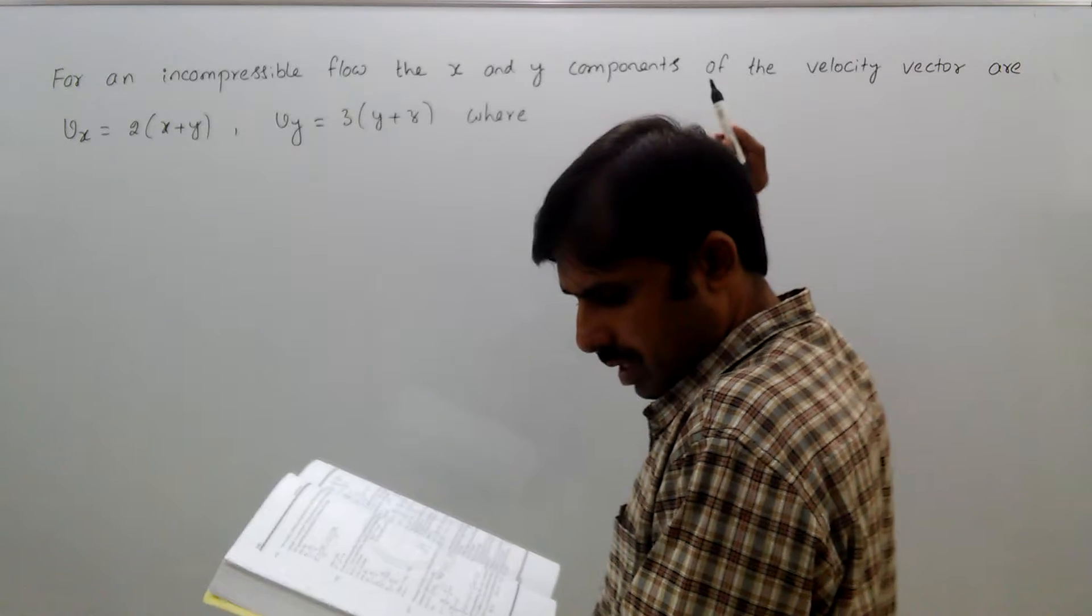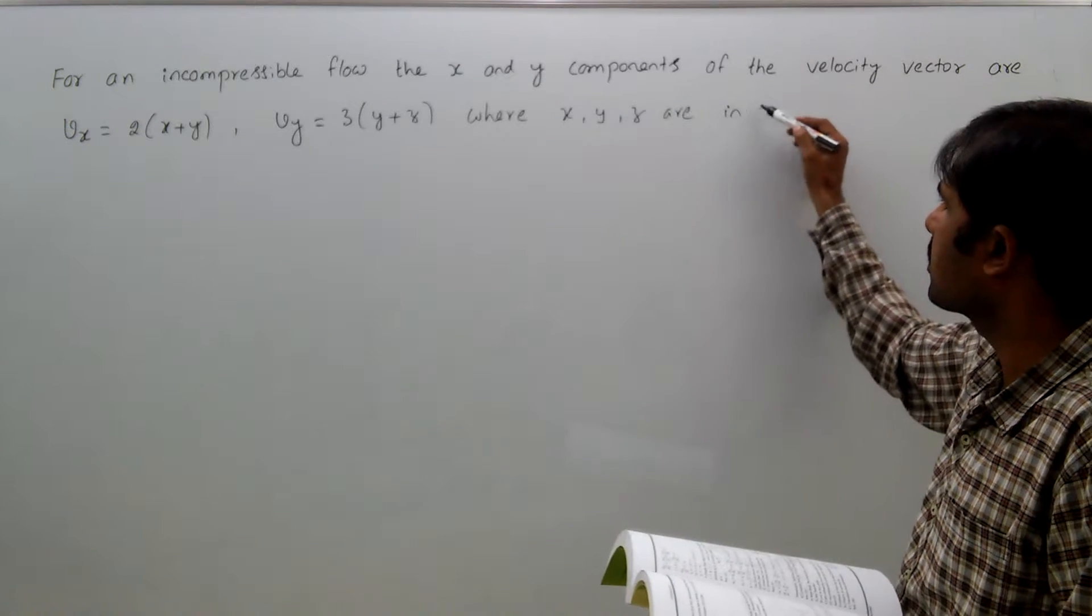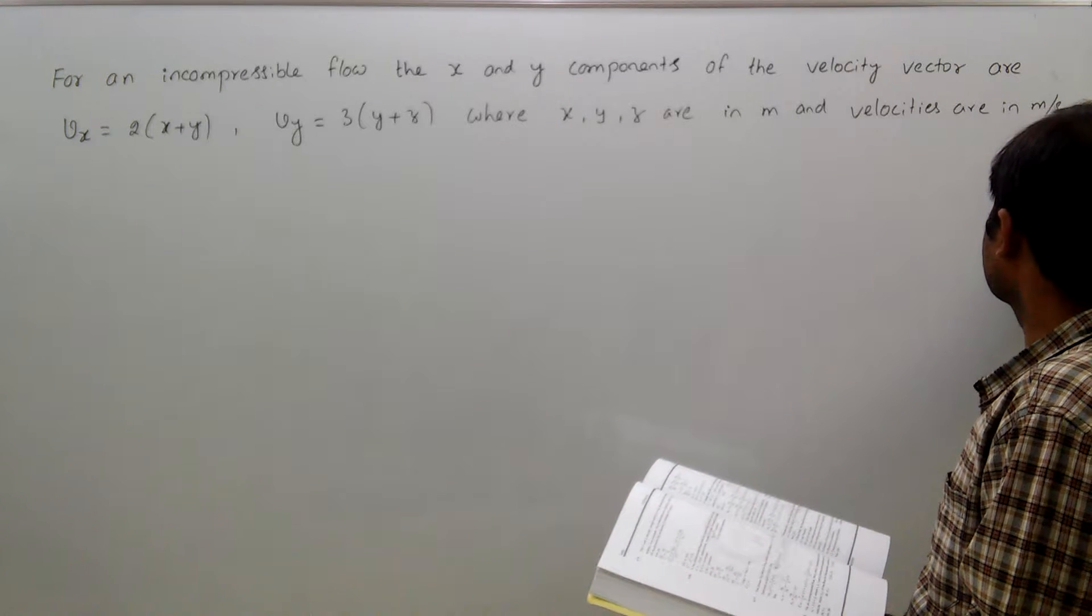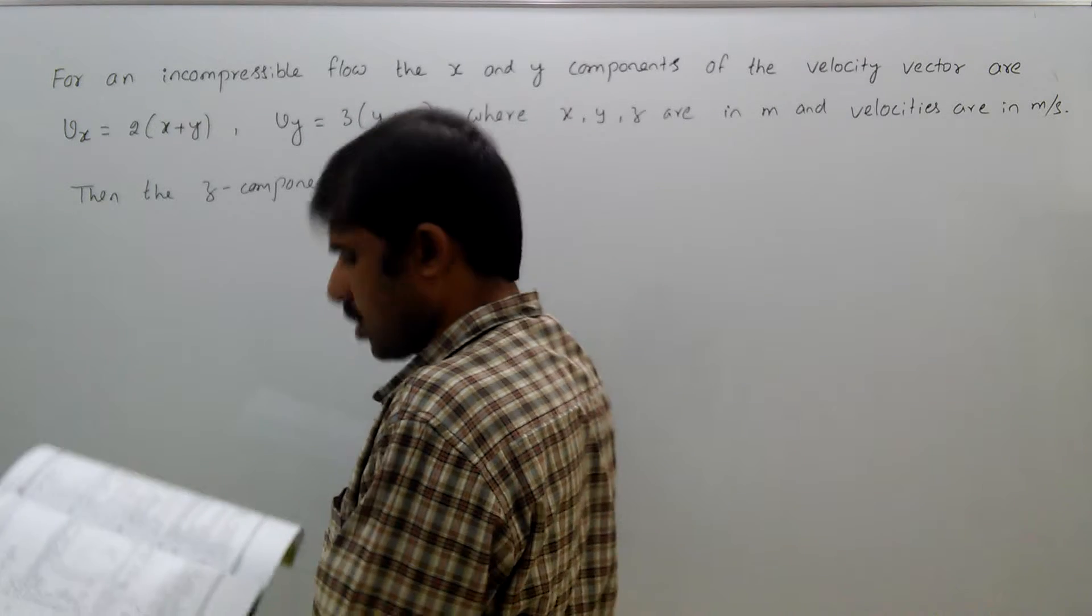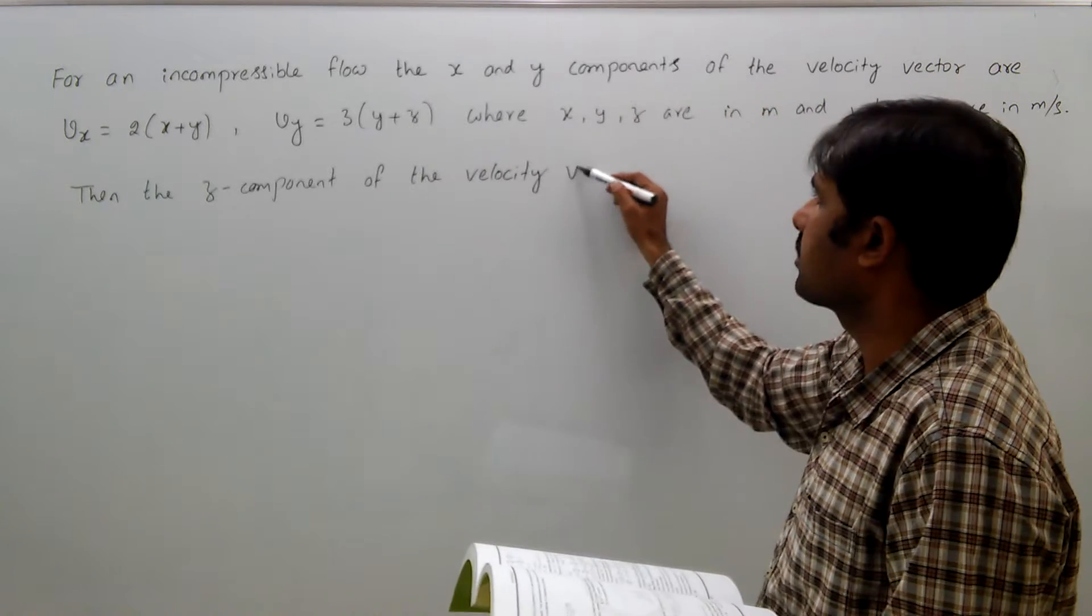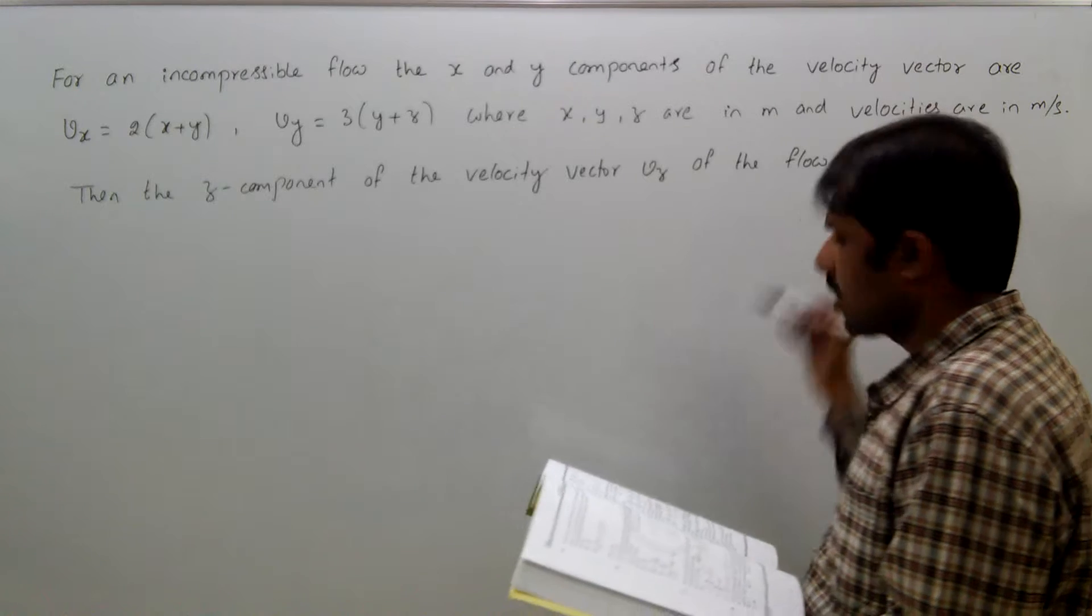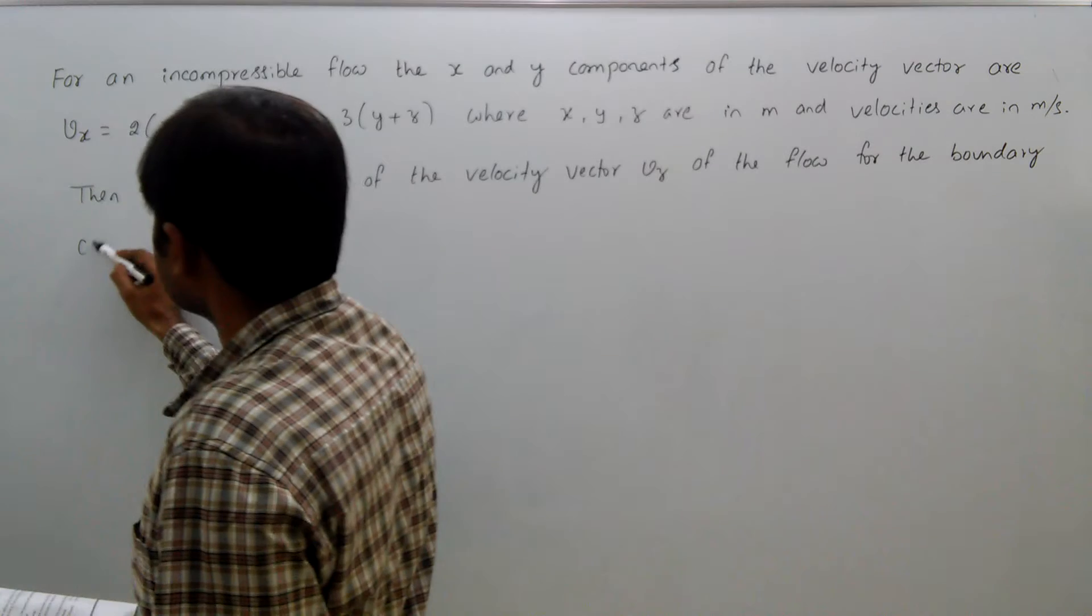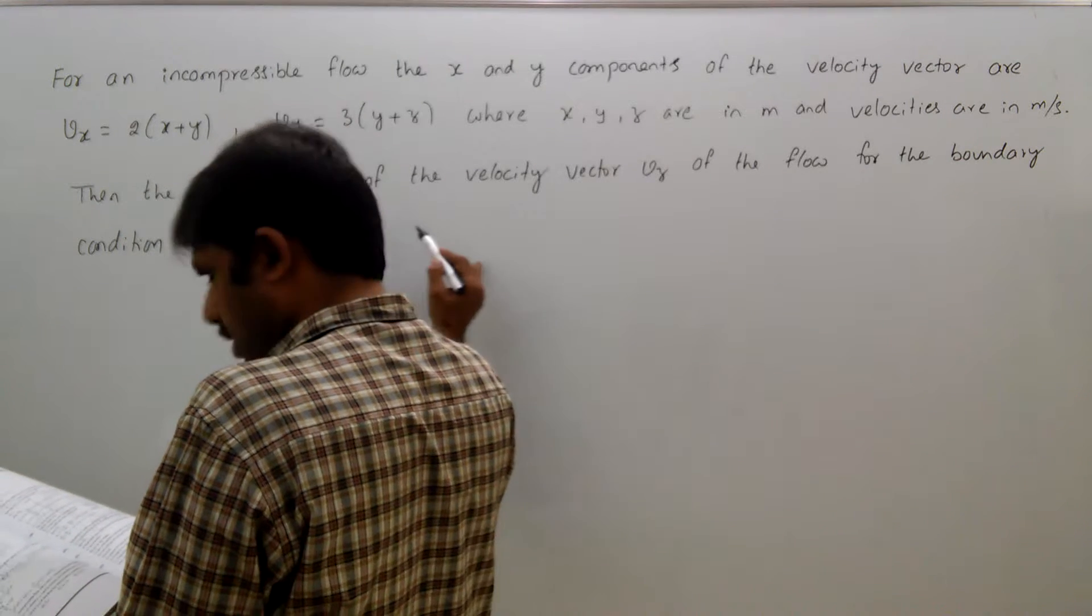Then the z component of the velocity vector vz of the flow, for the boundary condition vz = 0 at z = 0, is: